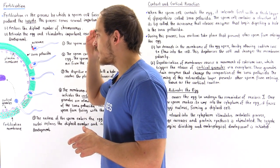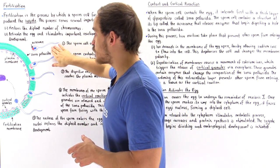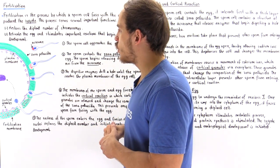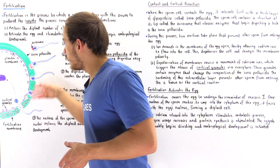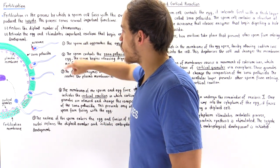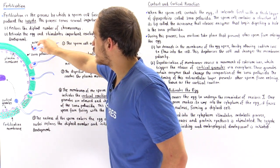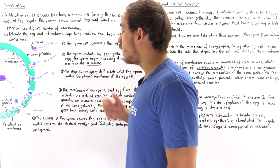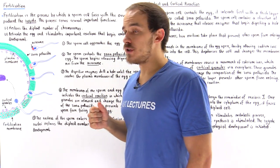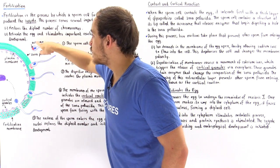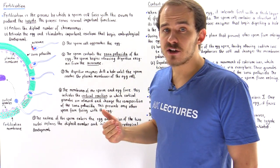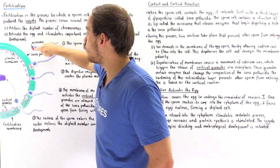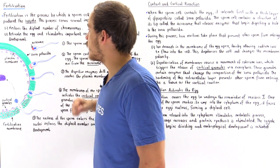Fertilization is the interaction between the sperm cell and the egg cell. The sperm cell is shown in blue and the egg cell is this entire structure. The sperm cell contains a tail — the flagellum — which allows it to move within fluid. It also contains a head that holds the cytoplasm, organelles such as the mitochondria, and the nucleus shown in blue.